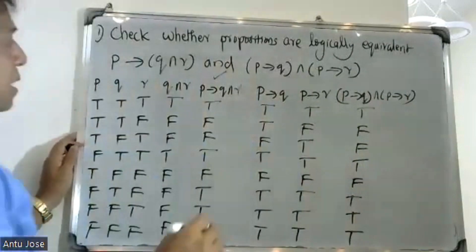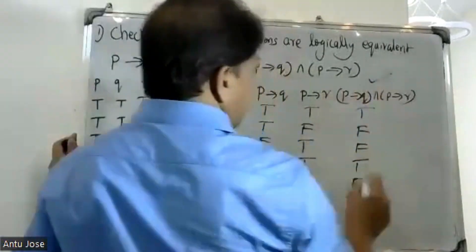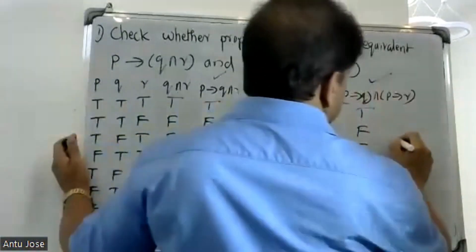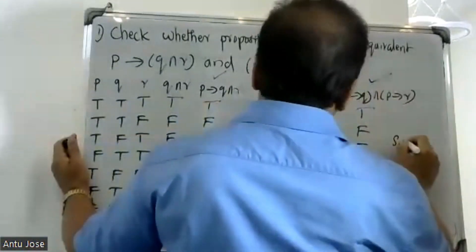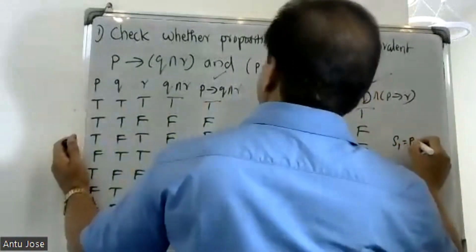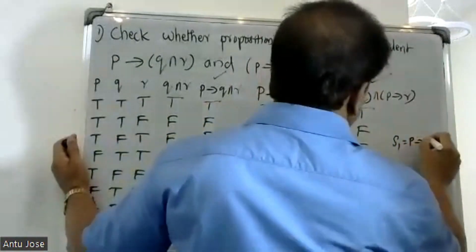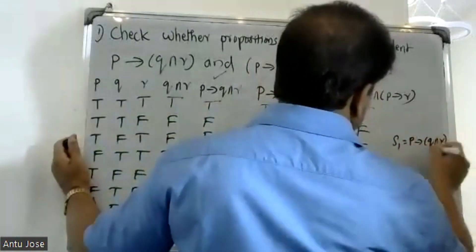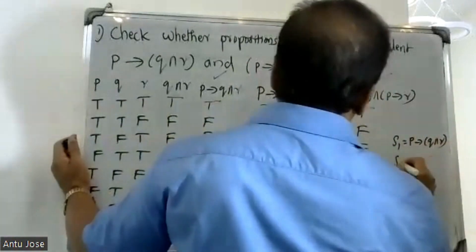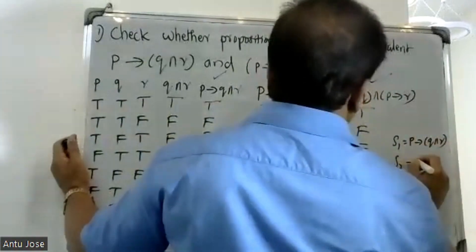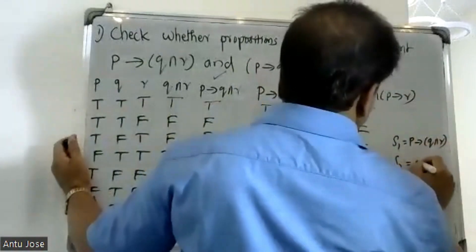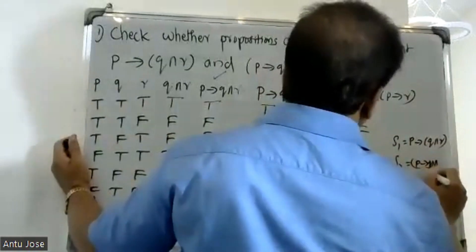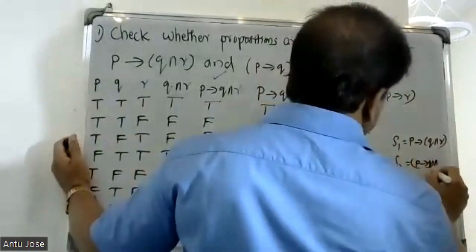The first statement S1 is p conditional Q, and S2 is p conditional Q and P conditional R.